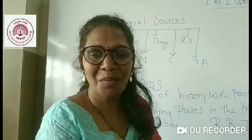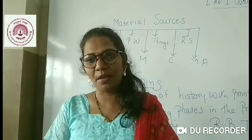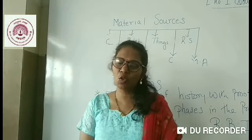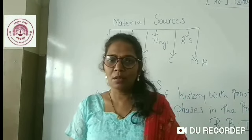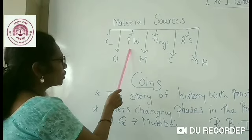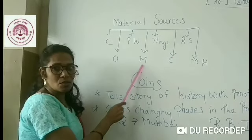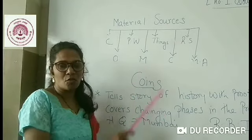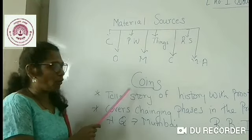Material sources are those sources which can be seen. They are scientifically proved and verified by historians — persons who do research on history topics. Material sources include coins, places of worship, things, royalties, ornaments, museums, clothing, and modern architecture. All these sources tell us about ancient, medieval, and modern periods.